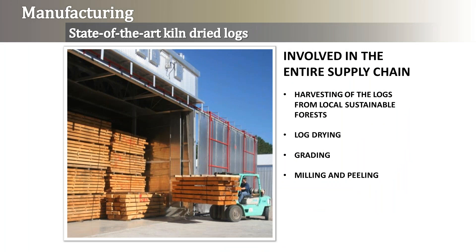We have a state-of-the-art kiln. We are involved in the buying process from the entire supply chain as far as the logs go — the harvesting of logs from local sustainable forests. For every tree that is cut down, five or six are planted to replace it. We are primarily using eastern white pine — all of our wall logs would be eastern white pine. Other species are available: cedar, Doug fir, lodgepole pine. The material, as I showed you on the opening screen, is called a cant — a pallet of these are half logs or possibly stair treads going into the kiln for drying.